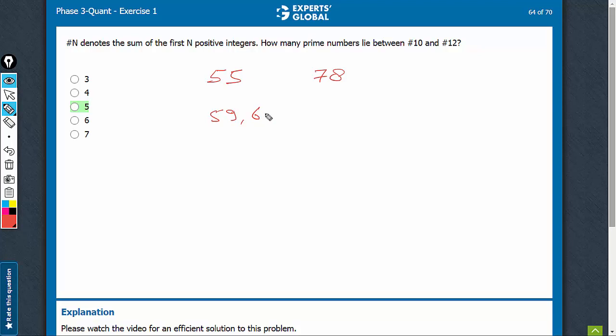We have 59, 61, 67, 71, 73 as the prime numbers. Five, that's the right answer.